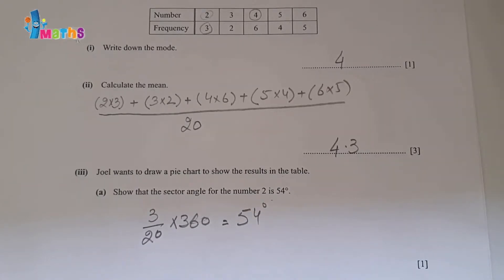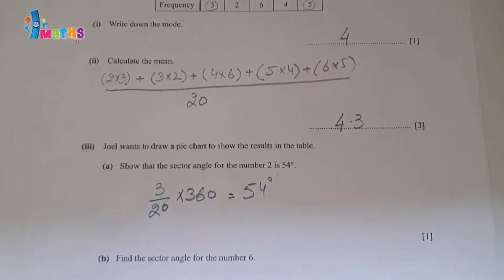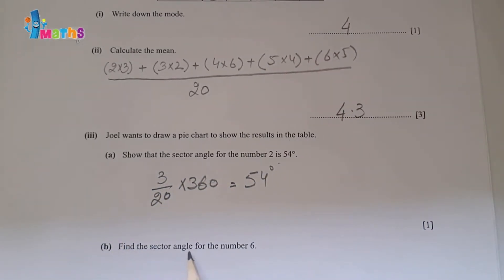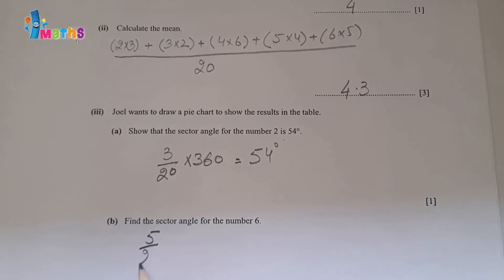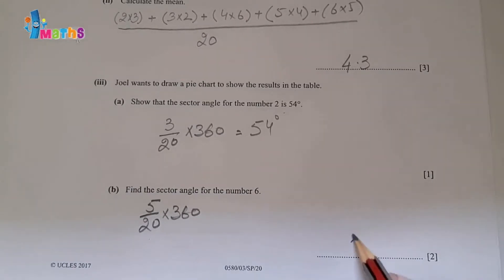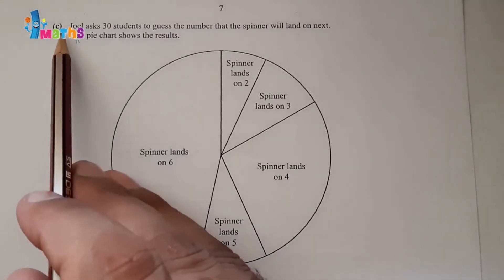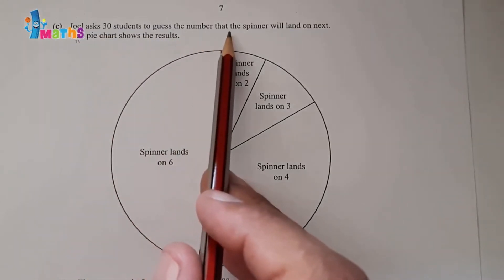Part b: find the sector angle for number 6. Number 6 occurs 5 times. So: 5 out of 20, multiplied by 360. Using the calculator: 5 divided by 20, multiplied by 360, equals 90 degrees. The answer is 90 degrees.